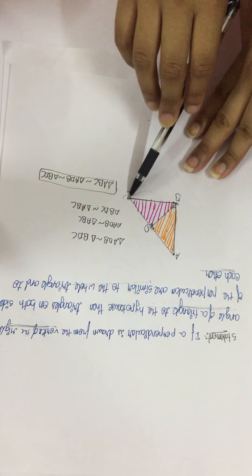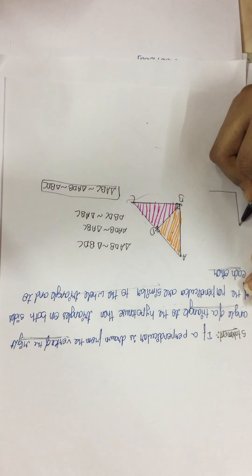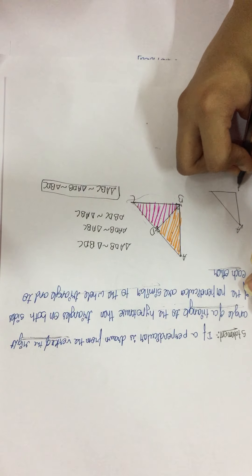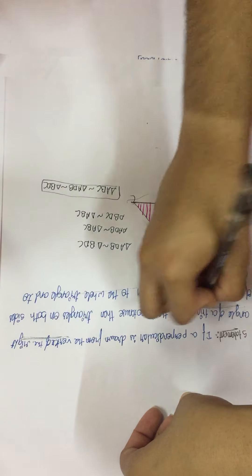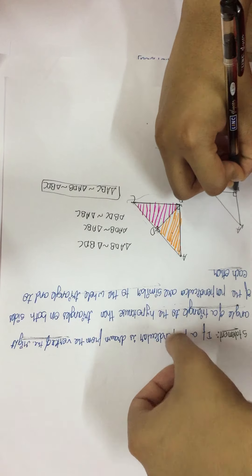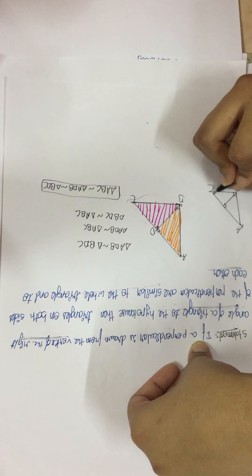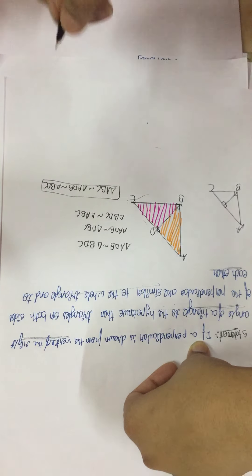So now I have a triangle ABC. Just forget the colorful triangle for a minute — look at the triangle I am drawing over here. So I am drawing triangle ABC, and this is the right angle corner. A perpendicular is drawn from the vertex of the right angle to the hypotenuse, which is AC. Now I have two right angles over here.